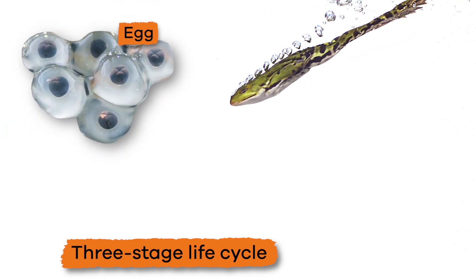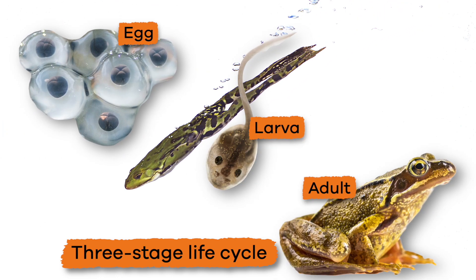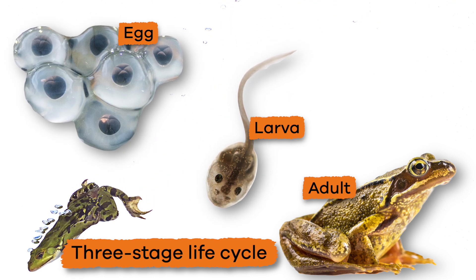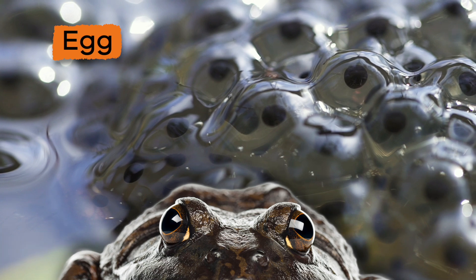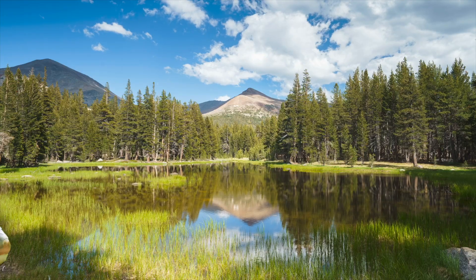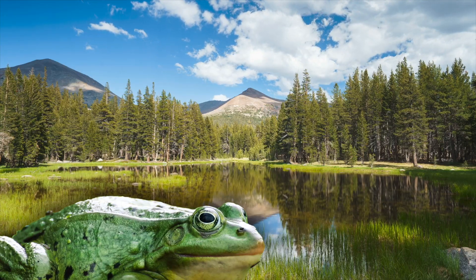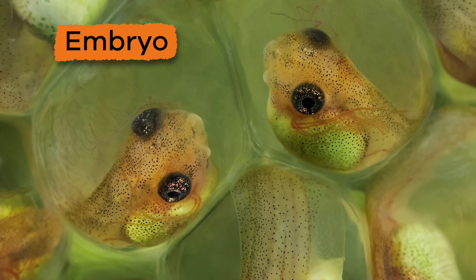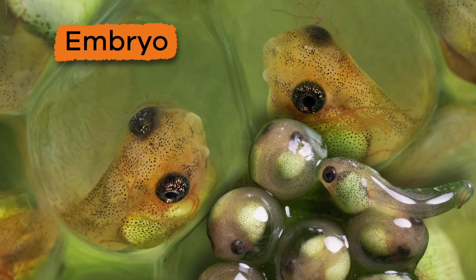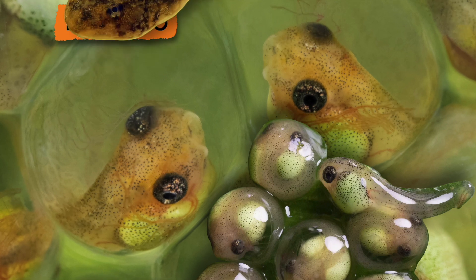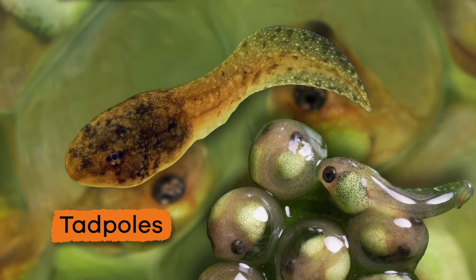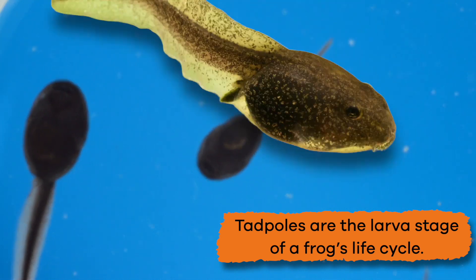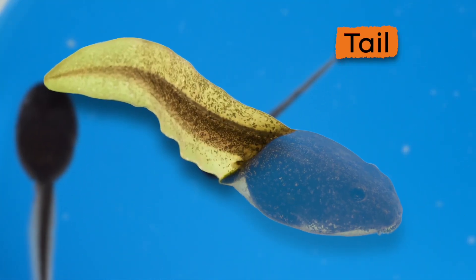Frogs complete a three-stage life cycle: egg, larva, and adult, but take on various forms during these stages. First, frogs start out as eggs. These eggs are laid in bodies of water, usually in the springtime. The embryos, or cells inside the eggs, then develop, and when the eggs hatch, they are tadpoles. Tadpoles are the larva stage of a frog's life cycle.